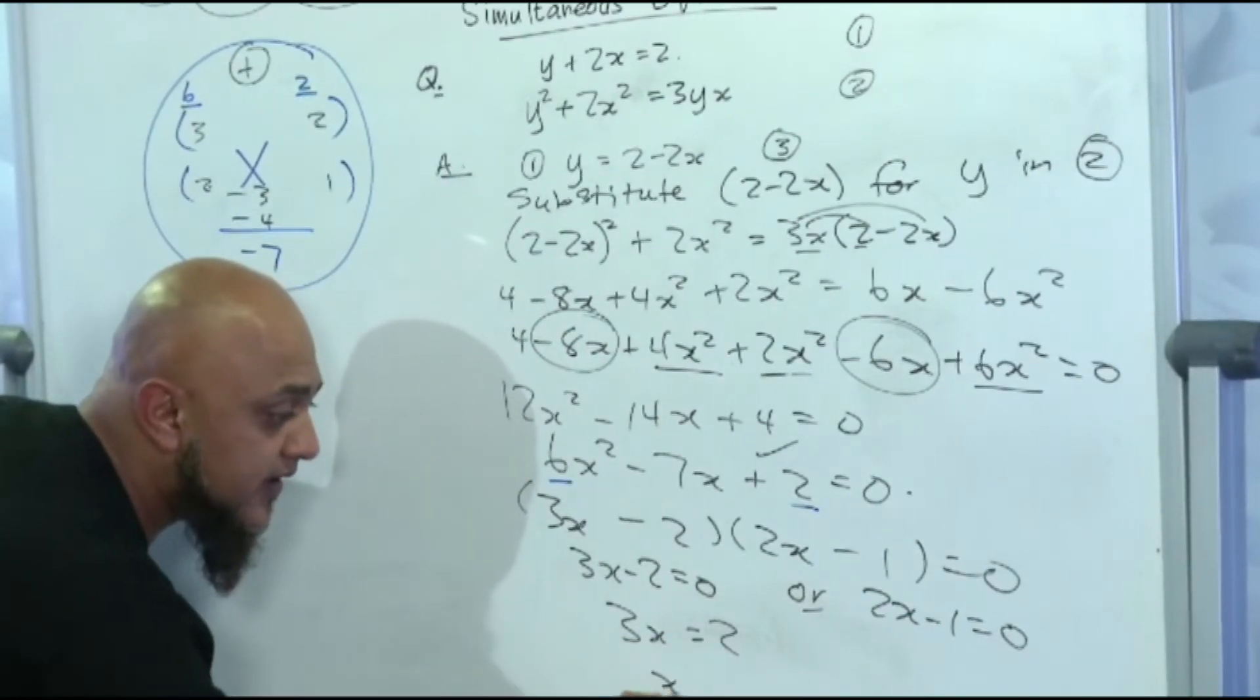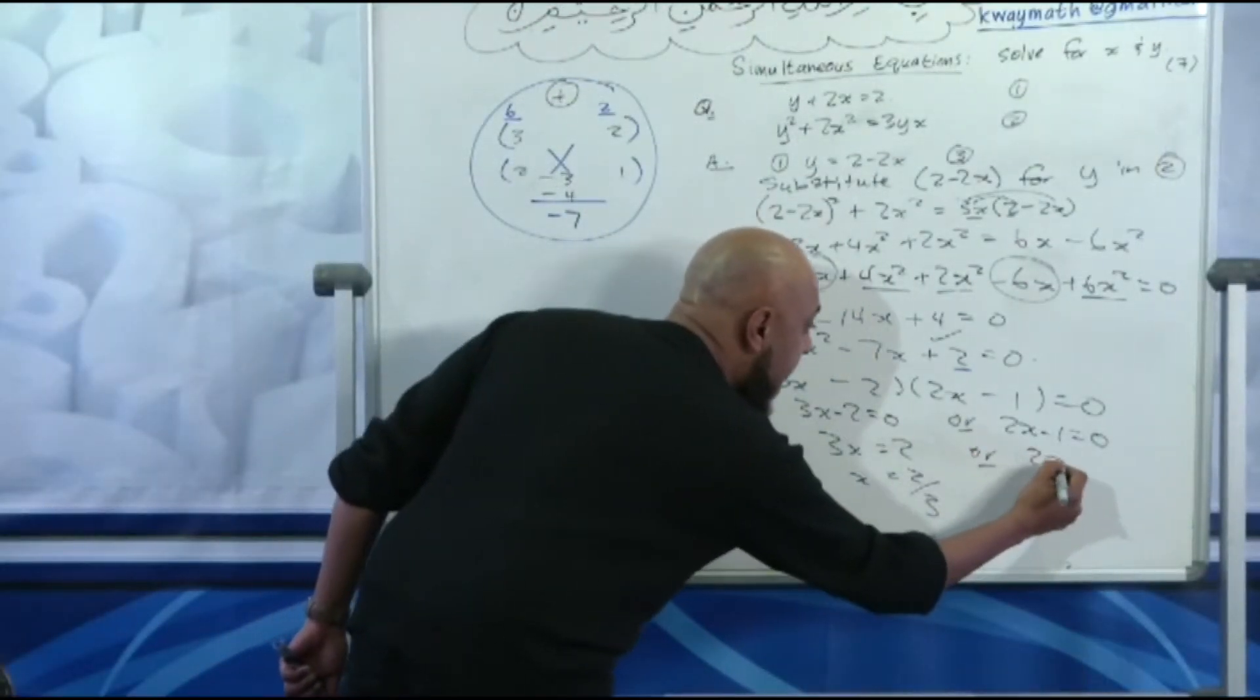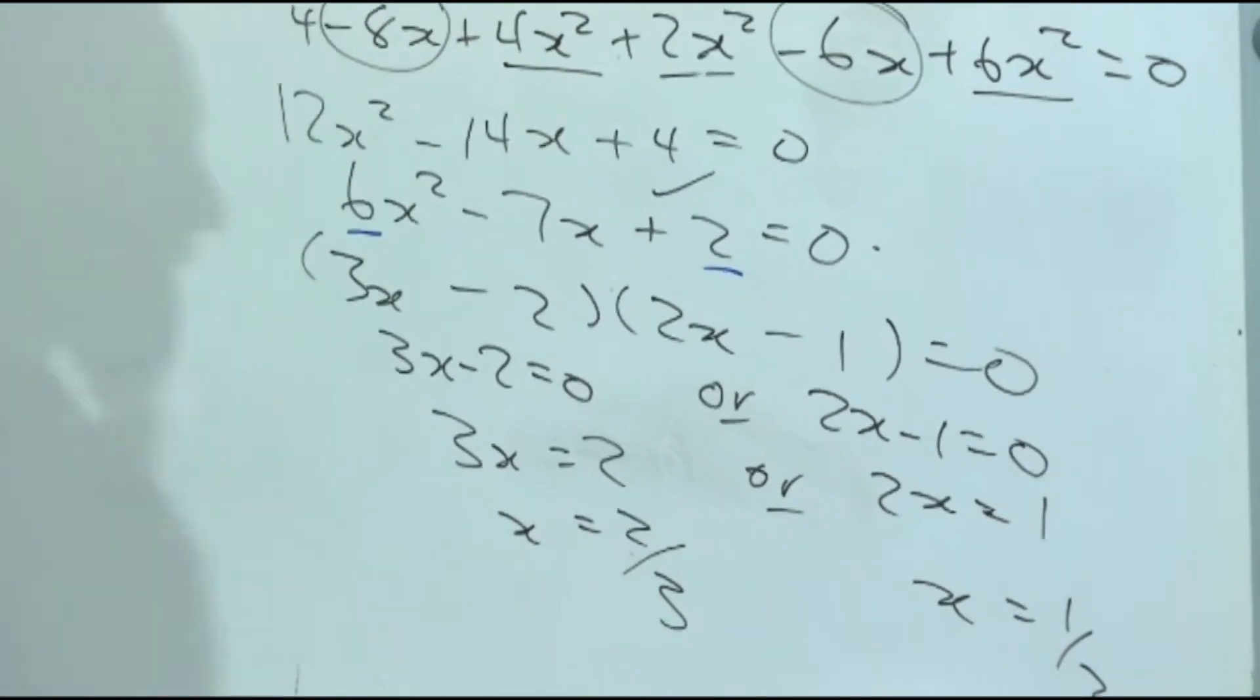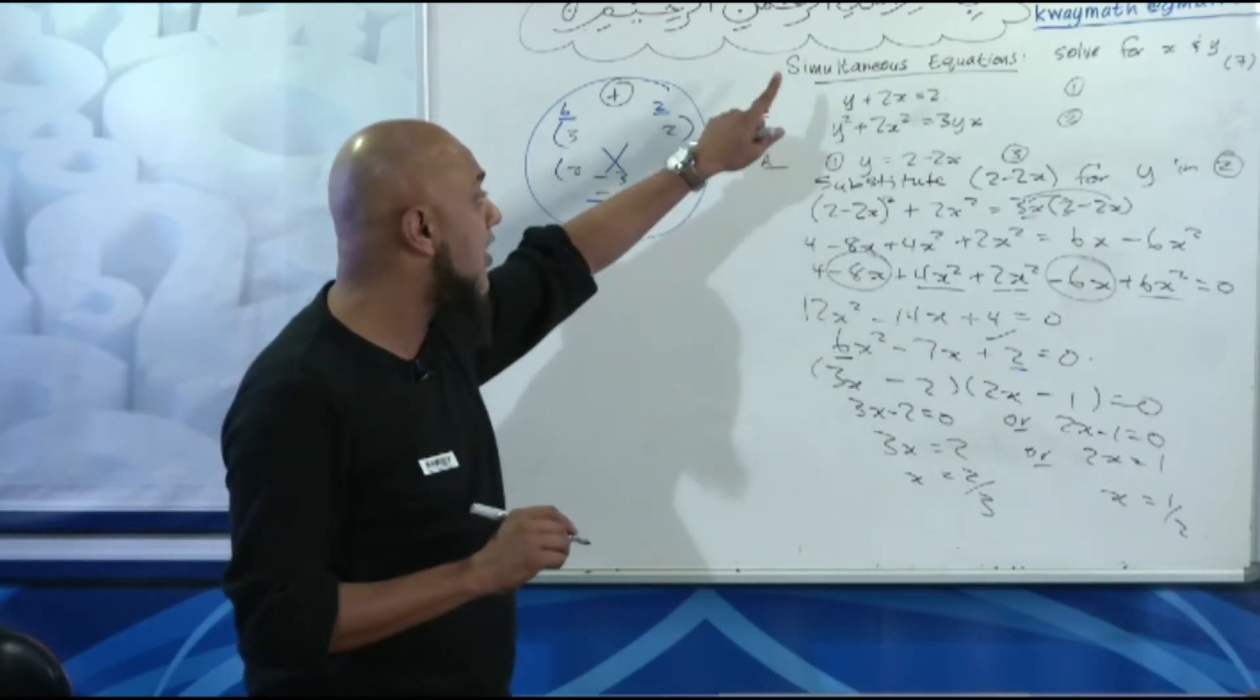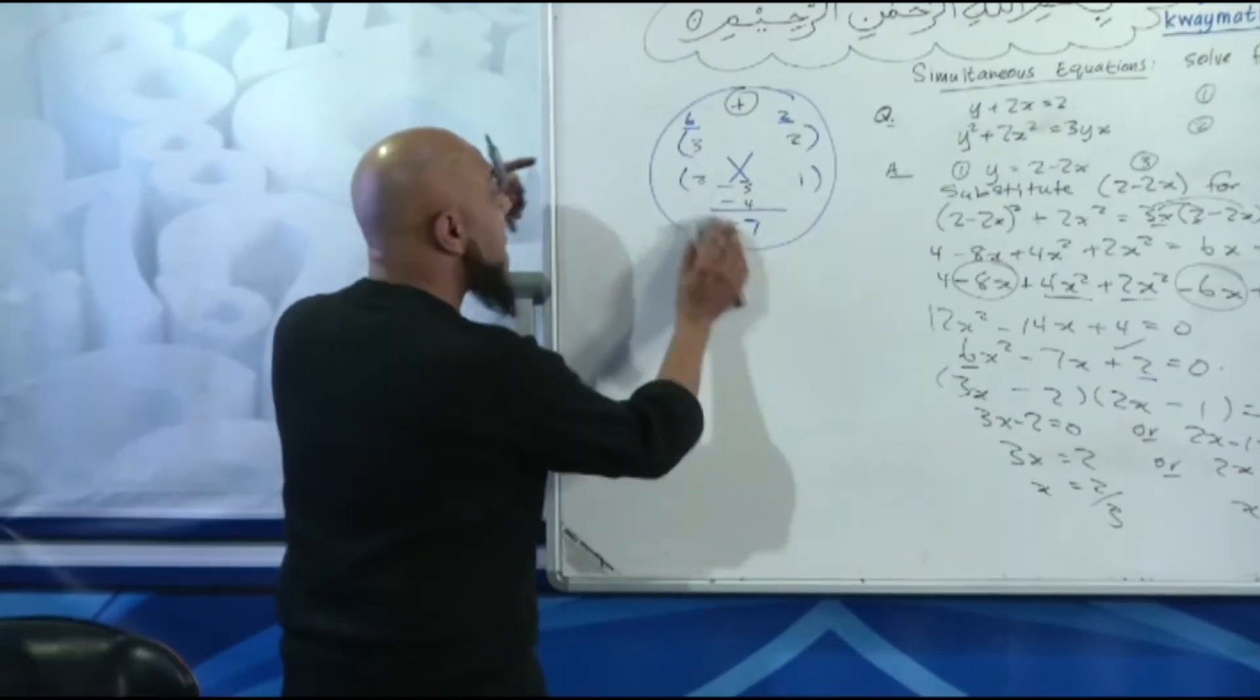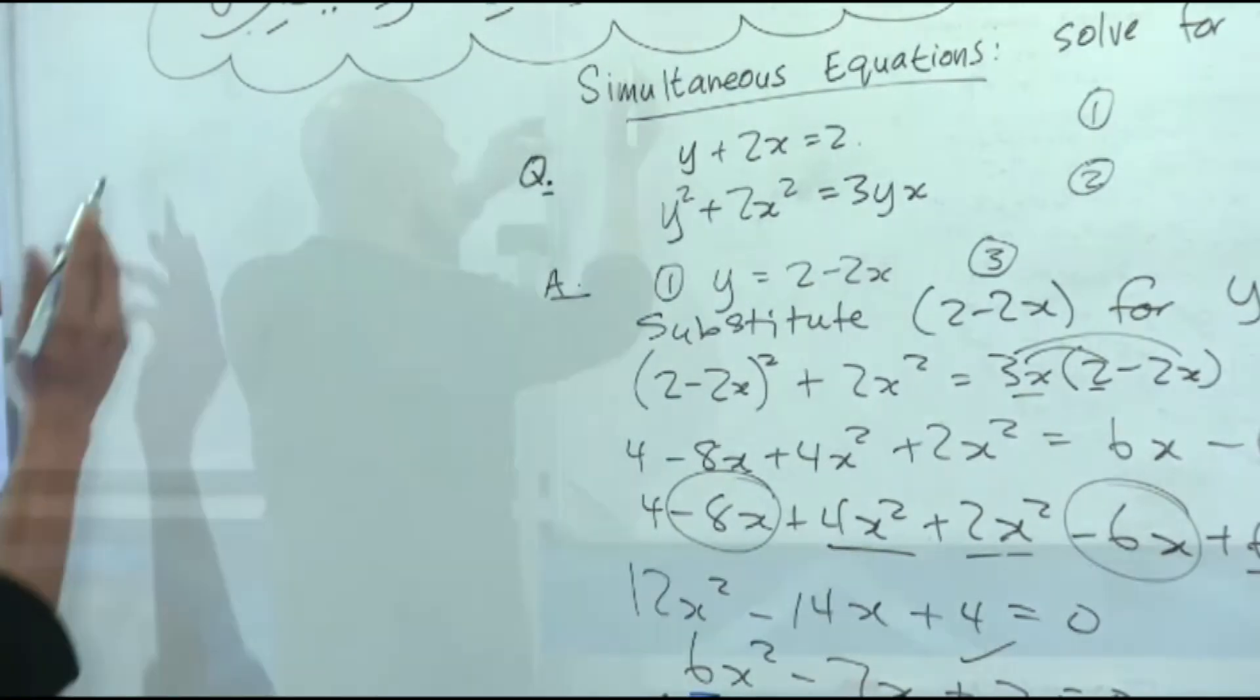3x minus 2 is equal to 0 or 2x minus 1 is equal to 0. 3x is equal to 2, x is equal to 2 over 3. Or 2x is equal to 1, x is equal to a half. Is that my final answer? No. That's not my final answer. We now need to go and solve for y. We've solved for x, we now need to solve for y. So let's go here on the side.